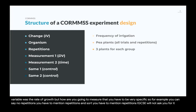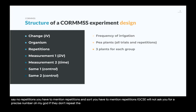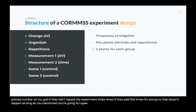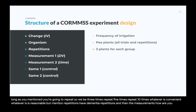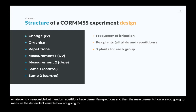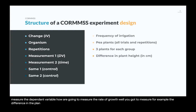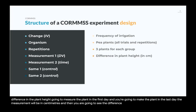IGCSE will not ask you for a precise number of repetitions — saying three, five, or ten times is all acceptable as long as it's reasonable. But you must mention repetitions. For the measurement, you're going to measure the difference in plant height — measure on the first day and on the last day. The measurement will be in centimeters, and you look at the difference in plant height from the first to the last day of the experiment.